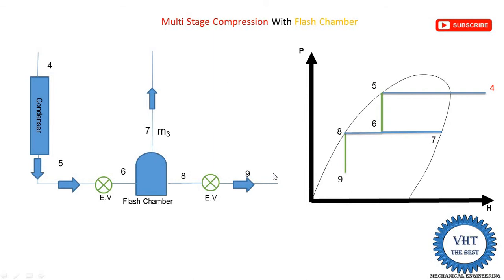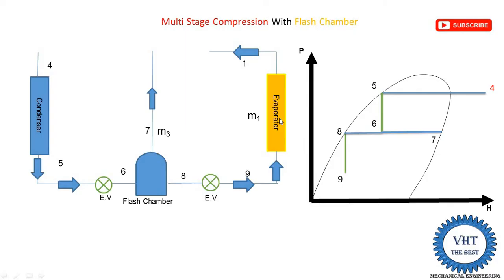In the evaporator, the mass of refrigerant circulated is m1. The process nine to one takes place in the evaporator, which is a heat exchanger that absorbs heat from the space requiring cooling. The refrigerant absorbs heat at constant temperature, changing phase from the liquid-vapor mixture at point nine to saturated vapor at point one on the saturated vapor line.